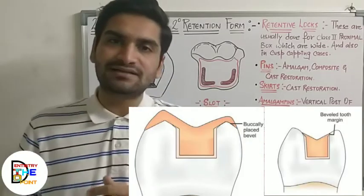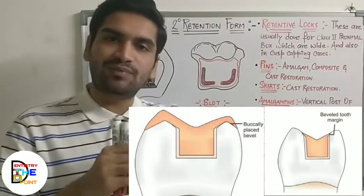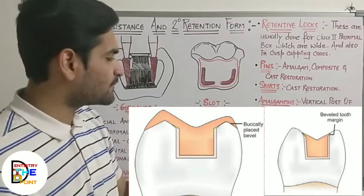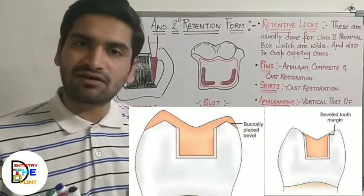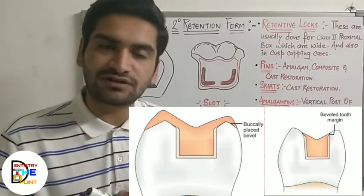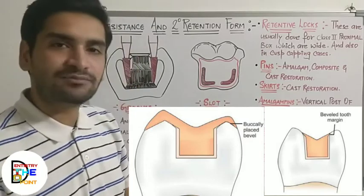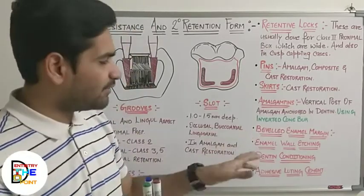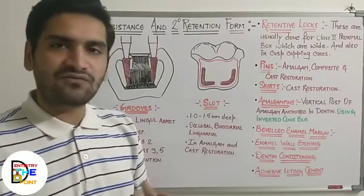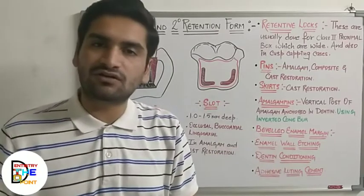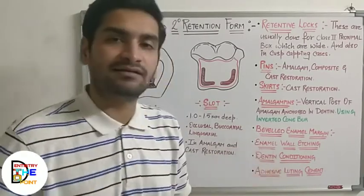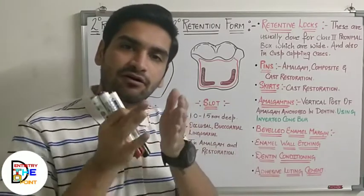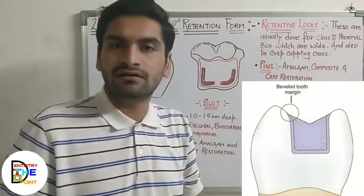Next is the beveled enamel margin. If you make a bevel on the margins of a restoration, it improves adaptation. Beveling is done for cast restorations, fixed partial dentures, crown preparations, and composite restorations. The purpose of beveling is to achieve closer adaptation of the restorative material with the tooth.